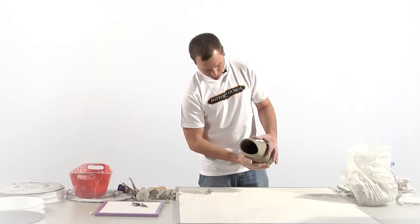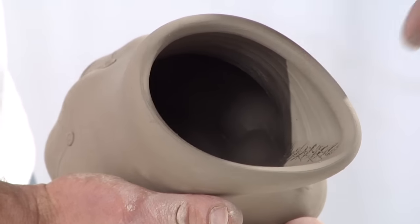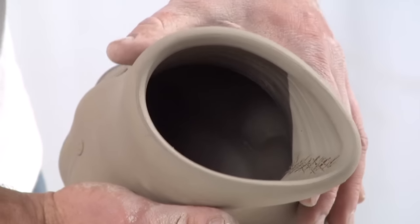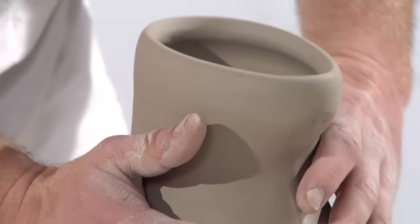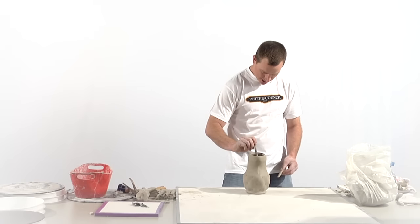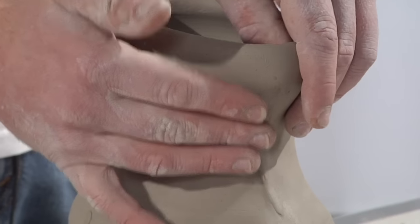So the next step here on the pitcher is to actually take this area that's been joined together from that gusset or dart shape that was cut out of it and come back and reinforce that with a coil. So real quick we'll slip that and push the coil into place and blend it.